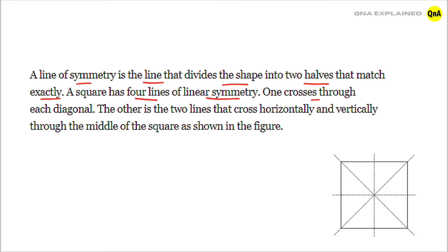One crosses through each diagonal. The other two are the lines that cross horizontally and vertically through the middle of the square, as shown in the figure.